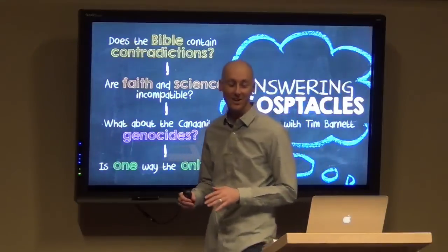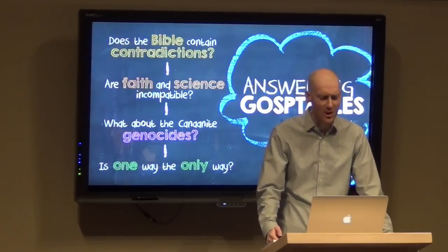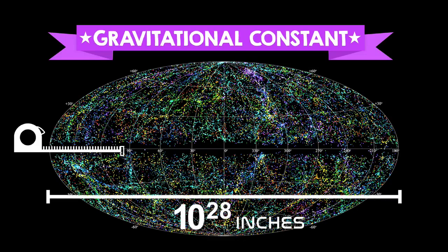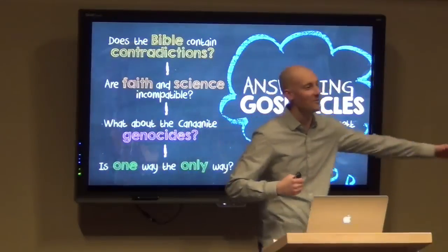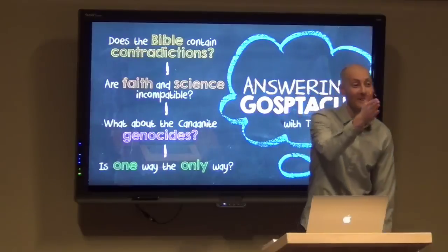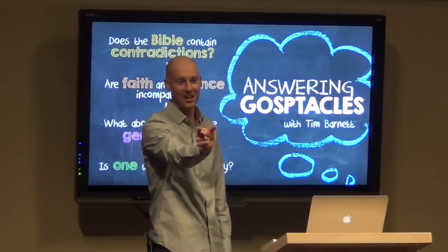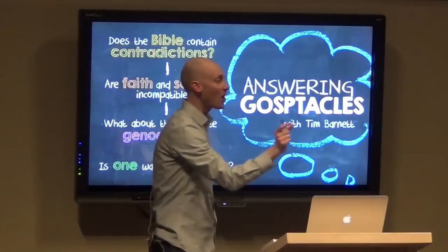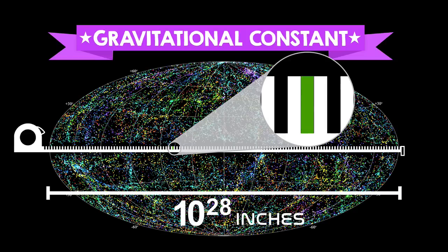Maybe that illustration doesn't float your boat. Here's another one. If we took a tape measure and stretched it across the entire visible universe in one-inch increments, and just one of those inches is the life-permitting inch — if you increase the gravitational constant, just move it over one inch, the universe collapses in on itself. Big crunch. No universe.